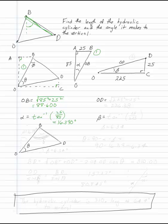Similarly I've got OD is the square root of 225 squared plus 25 squared. So OD is 226.38 by the Pythagorean theorem. And beta is the inverse tan of 25 over 225. That's from the second triangle. That gives me beta is 6.34.